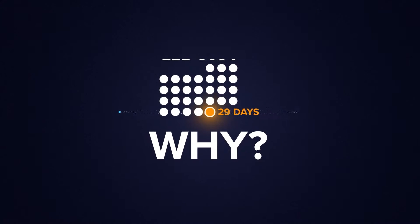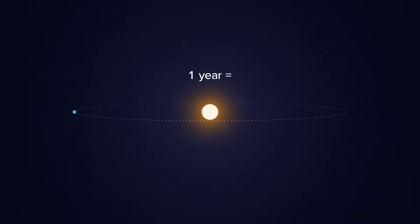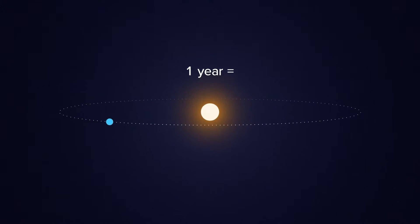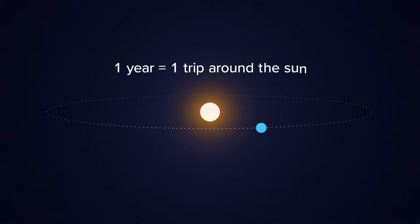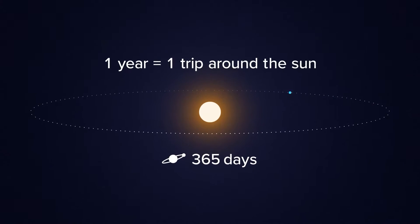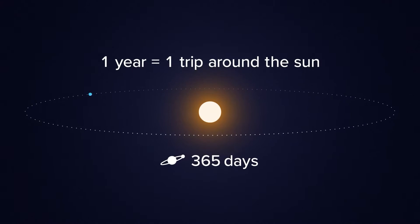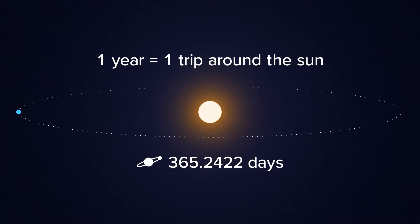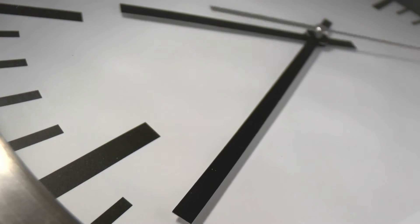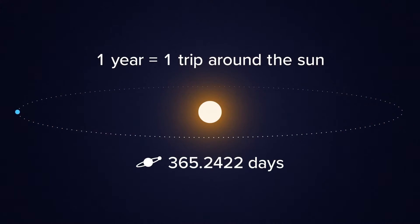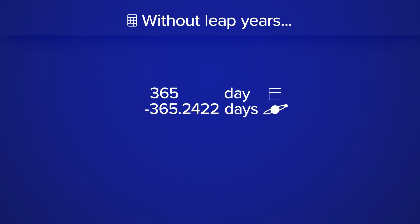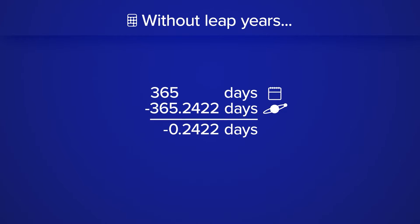To complete one trip around the sun takes 365 days — except it's actually 365.2422, so about a quarter day longer, which adds up to a full day every four years. This small difference means without leap years, we are behind about 5.8 hours each year.